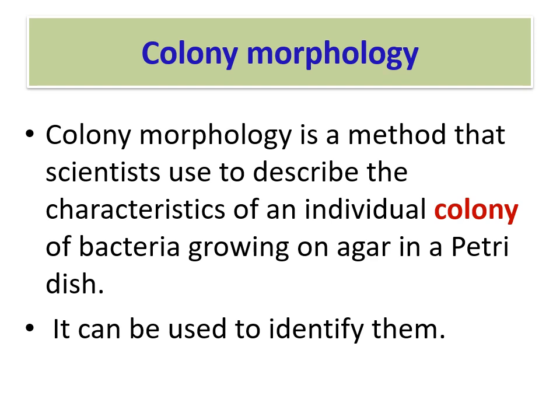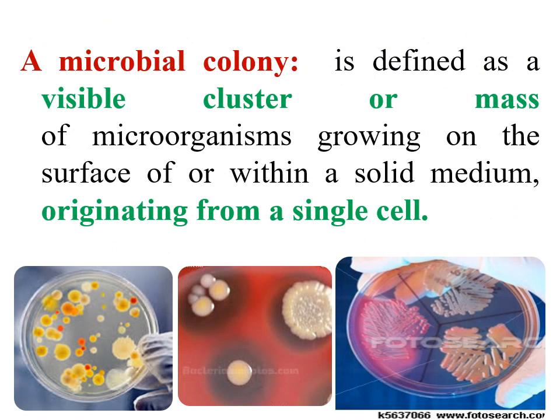We identify and distinguish how various growth media will affect colony growth, differentiate between gram-positive and gram-negative bacteria — which you already know from previous laboratories. Colony morphology is a method scientists use to describe the characteristics of an individual bacterial colony growing on agar in a petri dish. It can be used to identify them. A colony is a visible cluster or mass of microorganisms growing on the surface or within a solid medium, generated from a single cell.